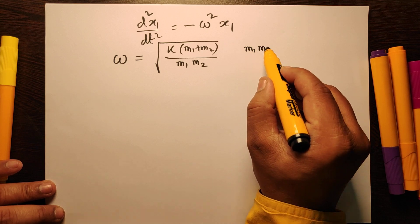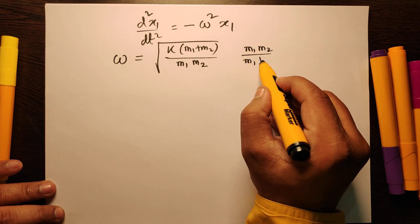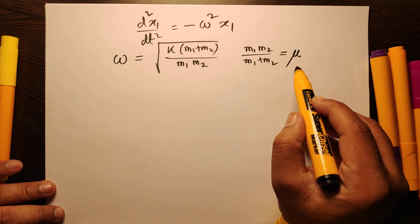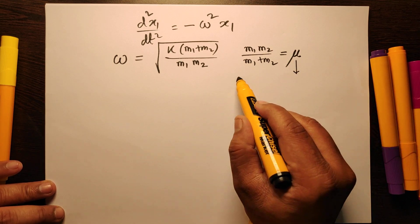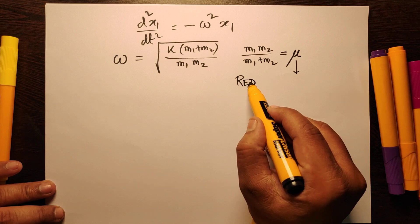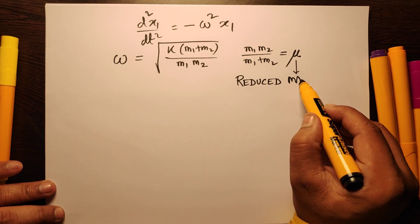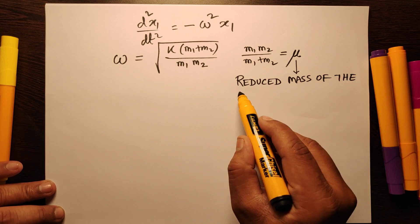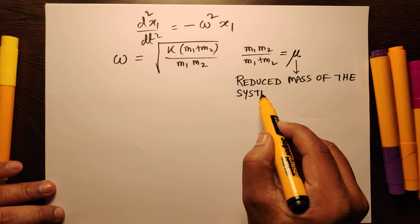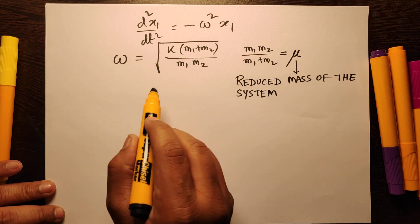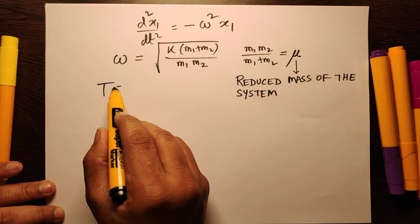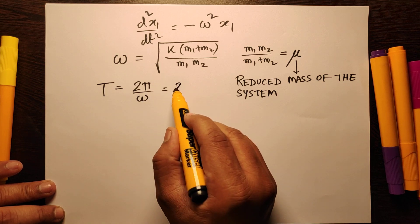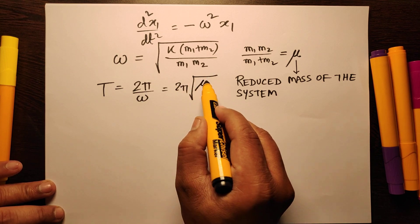This quantity m1·m2/(m1 plus m2) denoted by μ is also known as the reduced mass of the system, and hence the time period is equal to 2π/ω, that is 2π√(μ/k).